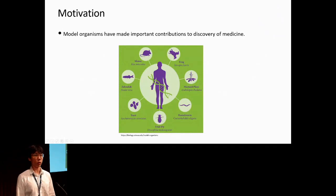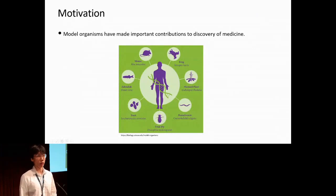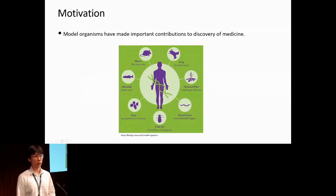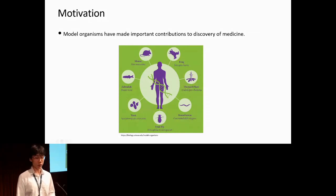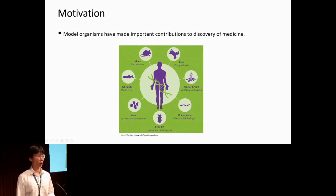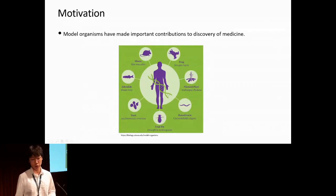Model organisms are very important for studying human diseases and pathways, but there is a gap between human and model organism biology. For example, if we want to study a specific gene for disease using mouse as a model, how can we know what is the gene of interest in the mouse? And also the problem happens the other way around — if we already find something interesting in mouse, how can we bring this knowledge back to human? We need to find a way to achieve information transfer across different species, especially between human and model organisms.